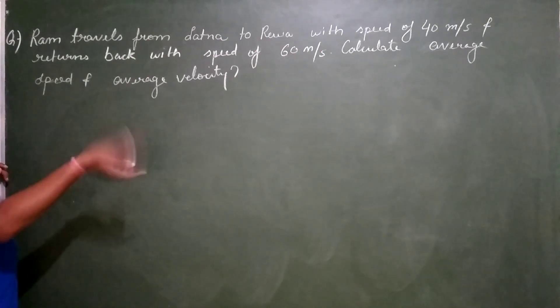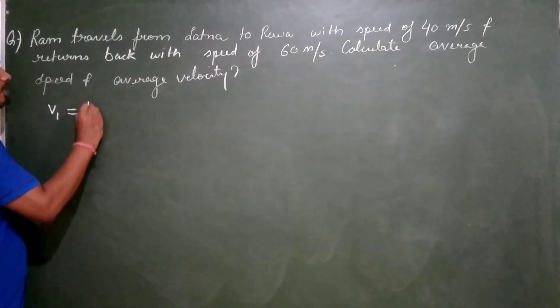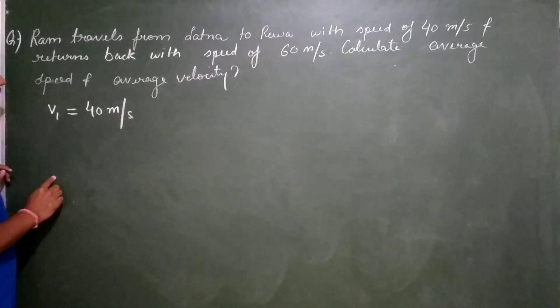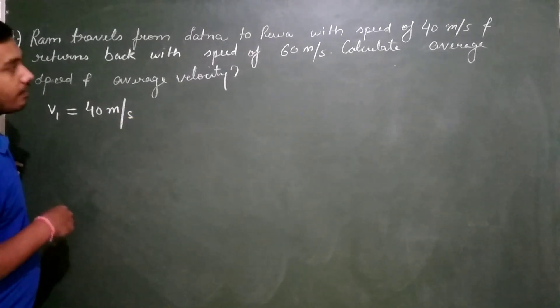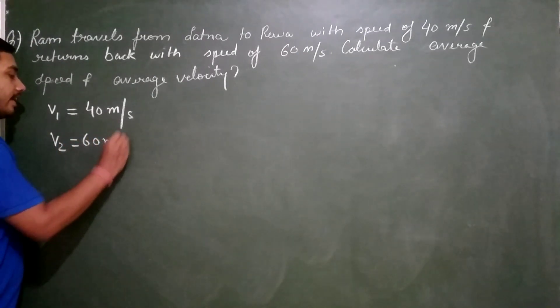He is travelling from Satana to Riva. Suppose the speed for travelling from Satana to Riva is V1. What is the value of V1? 40 meter per second. Now then he is returning back from Riva to Satana with speed of 60 meter per second.